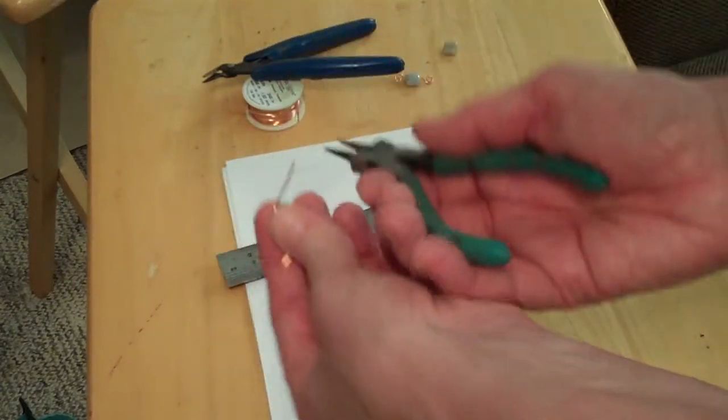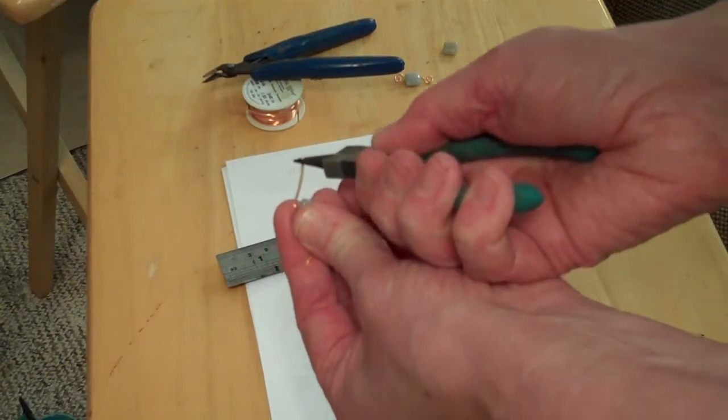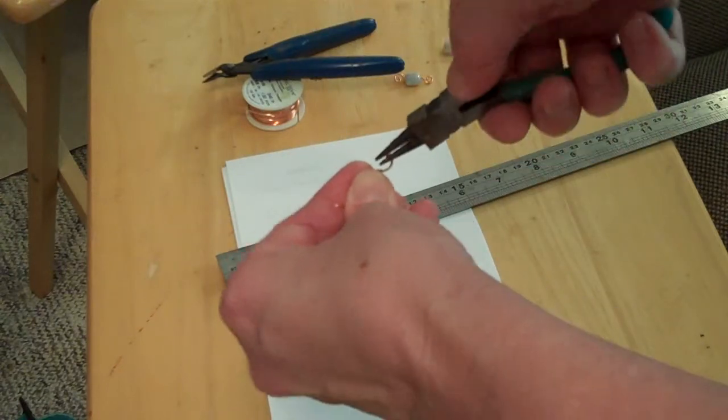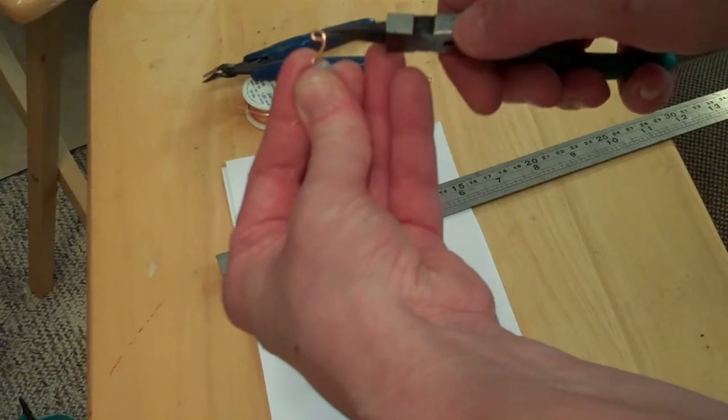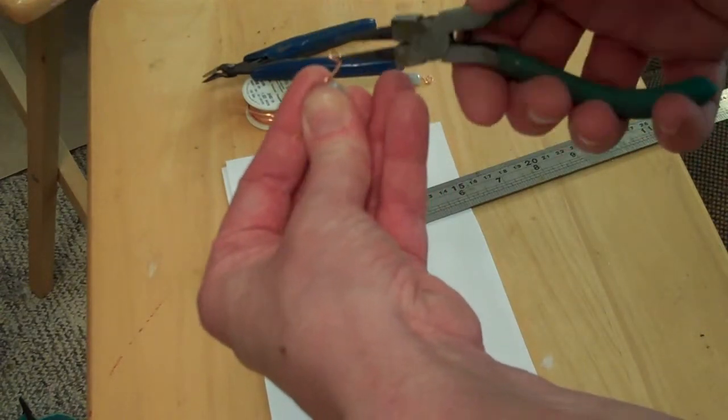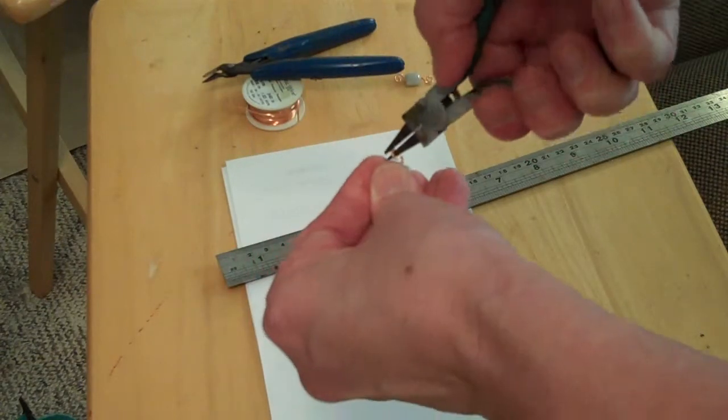And then I just take the point of the round nose and bend it around until you get it to where it completely touches. So you've got like a little loop. You want it to touch the wire and close it off. And then you just make it into like a corkscrew.